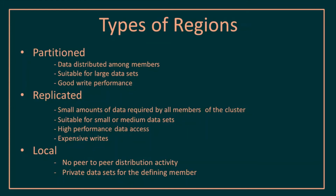The second type of region is the replicated region. As the name suggests, all the data is present on all the servers. It is suitable for small or medium data sets and provides very high performance data access, since the client can connect to any server to get the data. However, writes are expensive here because if a write happens on one server it has to propagate to all servers in the cluster. The third type is the local region, where there is no peer-to-peer distribution activity — data is not shared between servers and is confined to the particular node where the local region is defined.